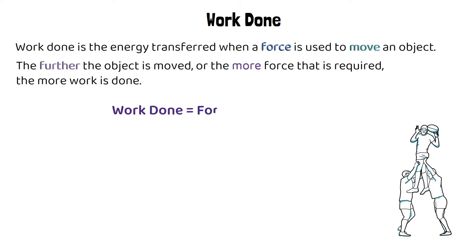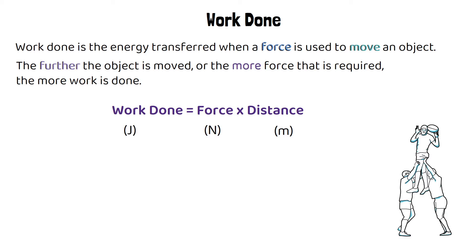The equation for work done is: work done equals force times distance. Force is measured in newtons, with the symbol N. Distance is measured in meters, with the symbol m. So work done is measured in newton meters, symbol Nm. Because work done is a measure of energy transferred, we would usually use J for joules instead — but one newton meter is equal to one joule.